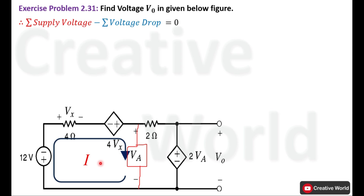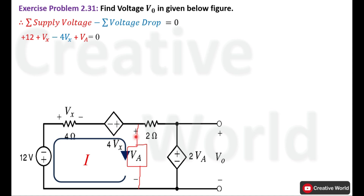The direction of current is clockwise. Now write the KVL equation for this imaginary closed loop. We will start from the voltage source: current entering terminal is positive, so voltage of this source is taken with positive sign — plus 12 volts. Next is Vx: current entering terminal is positive, so Vx is taken with positive sign. Next is the voltage dependent source: its value is 4Vx, and current entering terminal is negative, so it is taken with minus sign — minus 4Vx. Next element: current entering terminal is positive, and voltage is labeled Va, so Va is taken with positive sign.